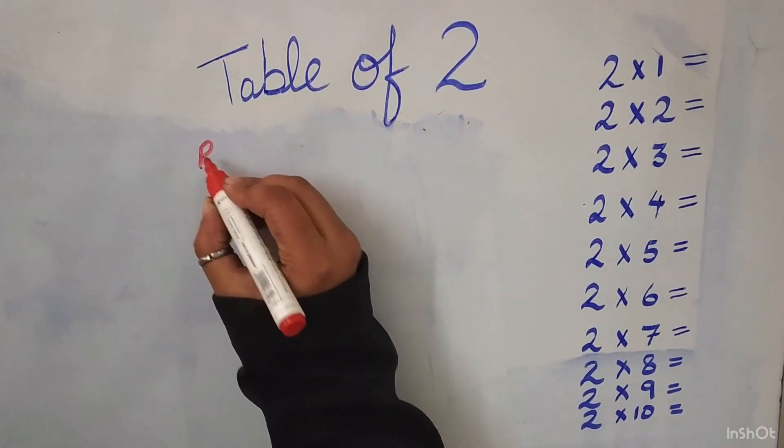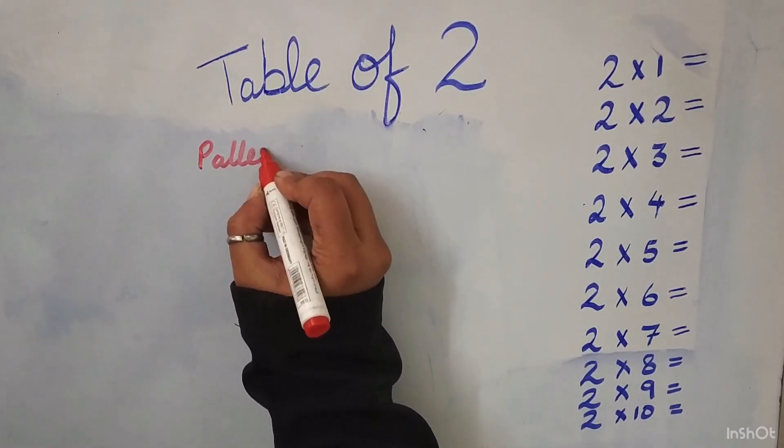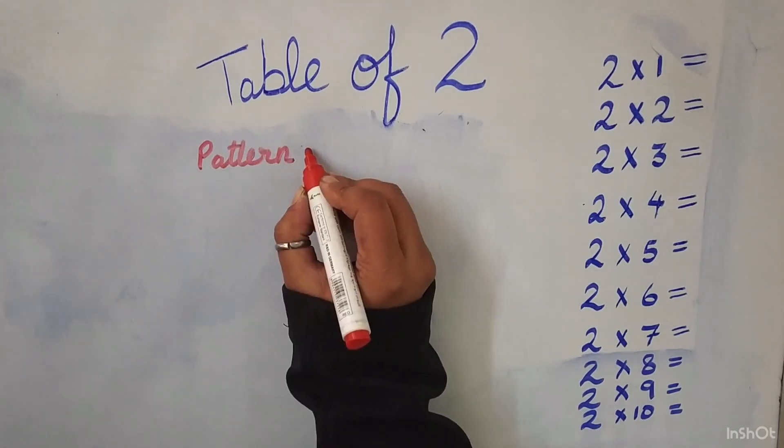We will start with the table of 2. The pattern for table of 2 is 2, 4, 6, 8 and 0.